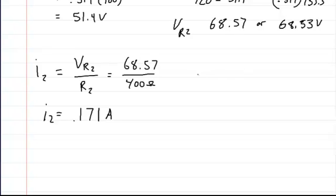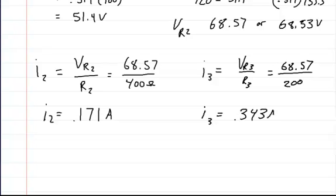And let's get the current in the other branch. So the current in I3 is equal to the voltage in R3 divided by the resistance R3, which is equal to 68.57 divided by 200. So I3 is equal to 0.343 amps.